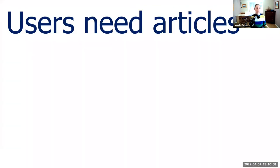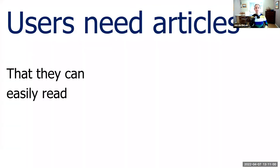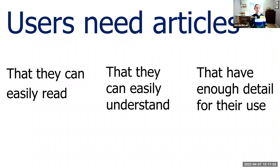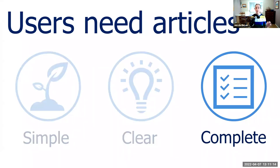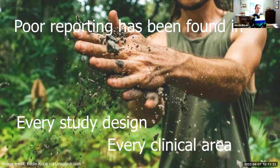What do users need? They need something that is easy to read, easy to understand, and has enough detail for their use. When writing journal articles, we need to think about our users and provide simple, clear, complete articles. We're focusing on completeness in this webinar. The problem is that in human research, in every clinical area studied thus far, information is poorly reported. The information readers need to judge a study's validity, decide whether sensible decisions were made, and combine results in syntheses is simply missing.